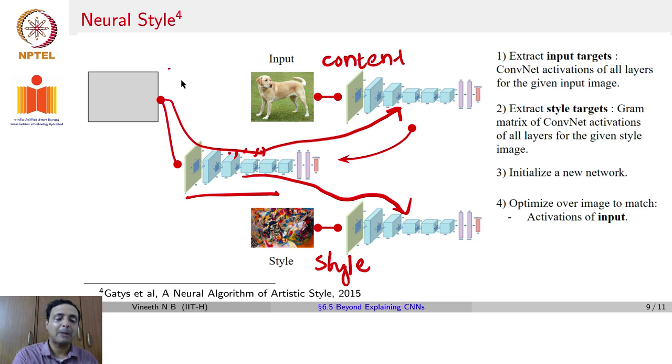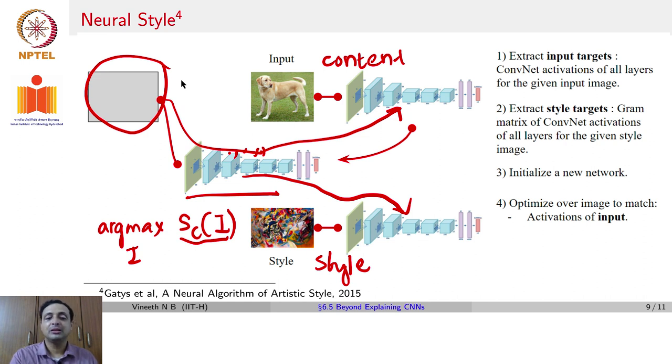You now backprop to image for a gray image and another of these AlexNet models or any CNN model, you would do a backprop to image. Remember, that we said was argmax of i. We try to maximize the score of i with respect to a particular neuron. But this time, we are going to try to minimize the distance between the activations that we get for this input here, and the activations that we get for this dog image on this network.